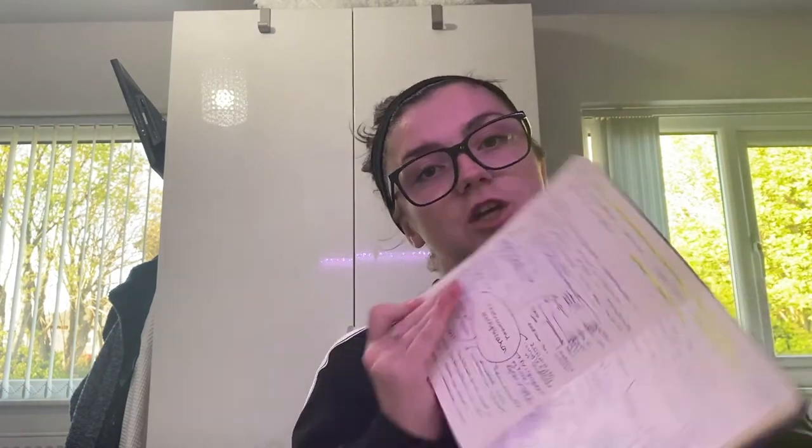The essay that I was planning — I've got my plan here and I'll show you me doing this in a time-lapse — was: 'How does a concentrating kidney establish a gradient of increasing osmolality through the renal medulla? How good is the experimental support involved, and identify aspects of further investigation?' If you know nothing about biology, that was gibberish, and that's absolutely fine — I needed to pick an essay I was familiar with in order to do this.